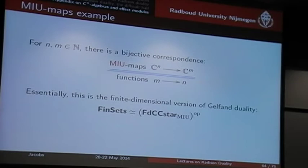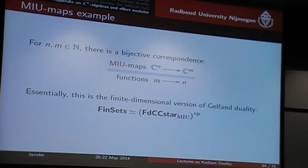The MIU maps from C to M_n(C) — they correspond to functions from M to M. So these MIU maps are very restrictive, at least in this finite-dimensional case. And my point is that maybe they are too restrictive to be computationally interesting.